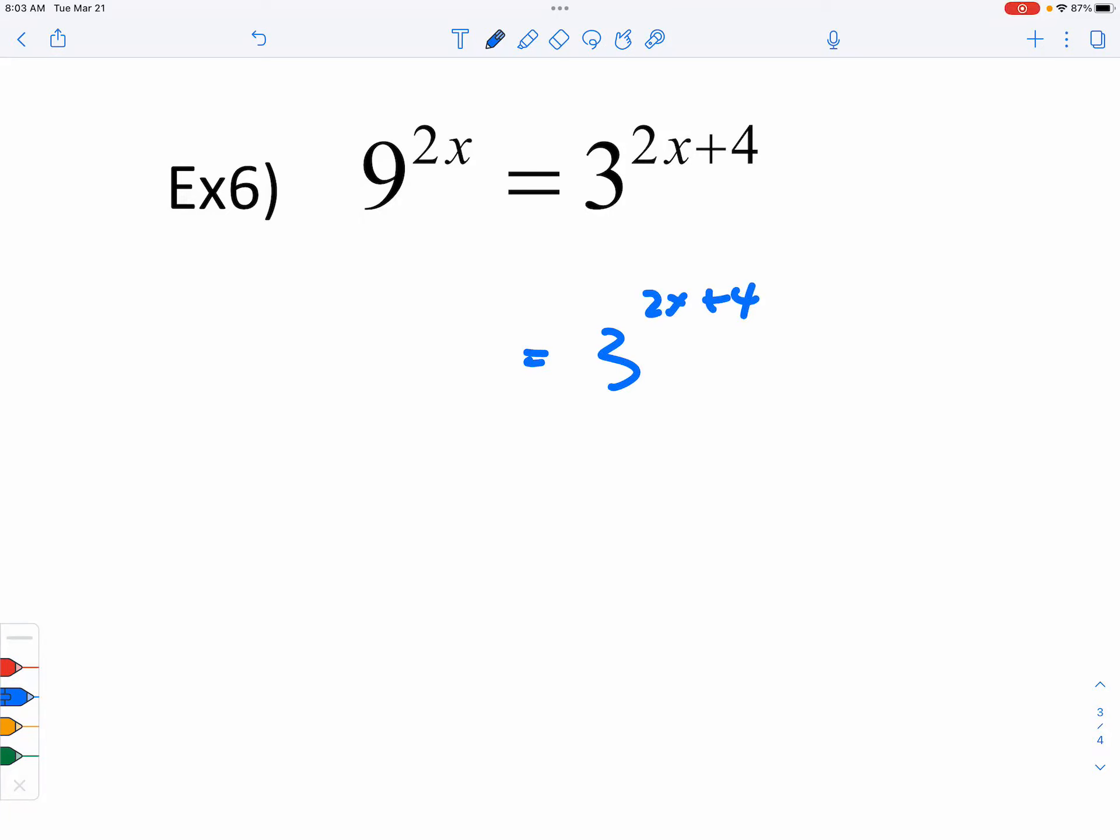So now this is the notation I want you to practice. Ready? This is 9 to the 2x power, and 9 is definitely related to 3. So I'm using a parenthesis here because I'm going to remodel the 9. I'm going to write down something that's equivalent to 9. What is equivalent to 9? Three squared.